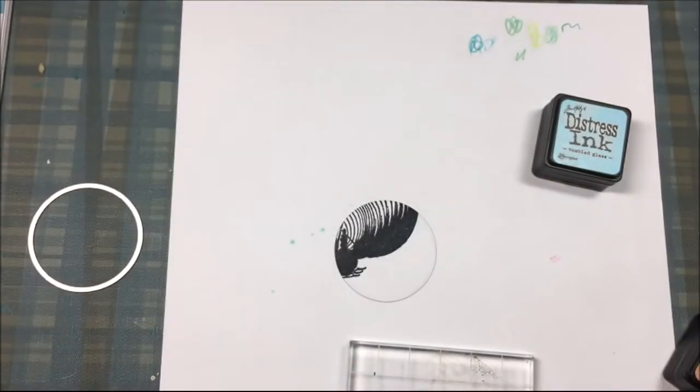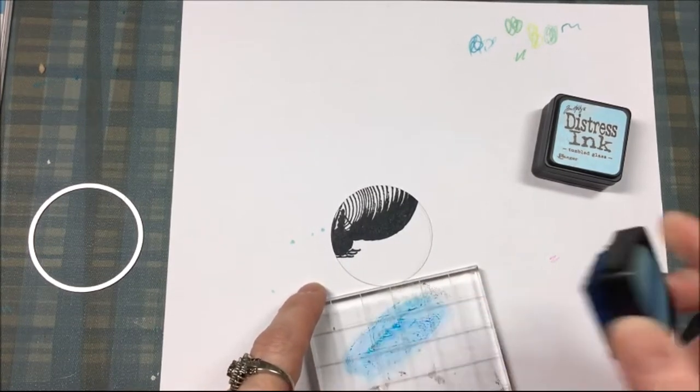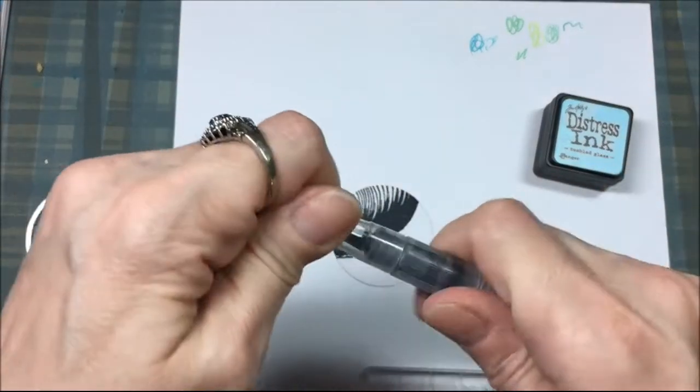And that's the Salty Ocean and I start with Salty Ocean first and I'm just going to rub a little bit of that onto my acrylic stamping block and I have my water brush.